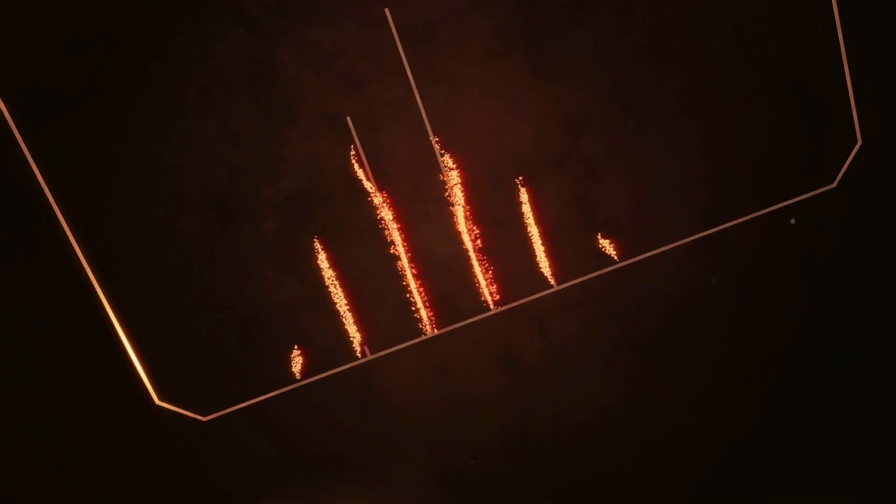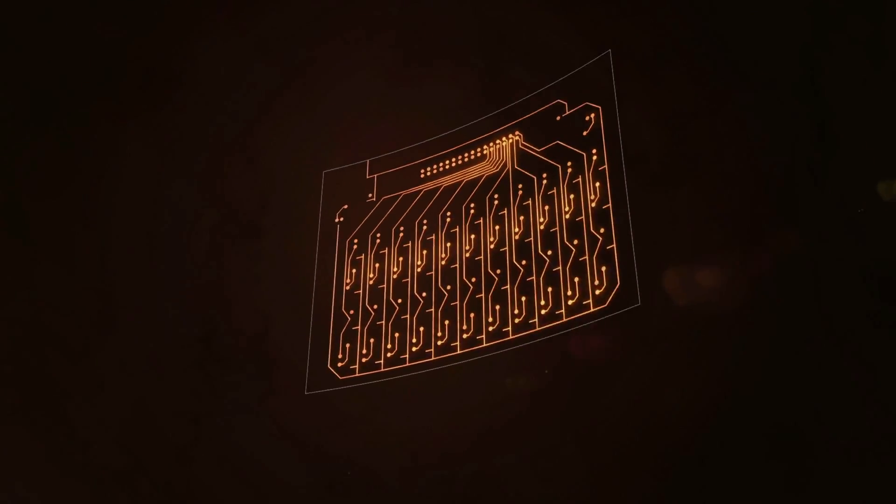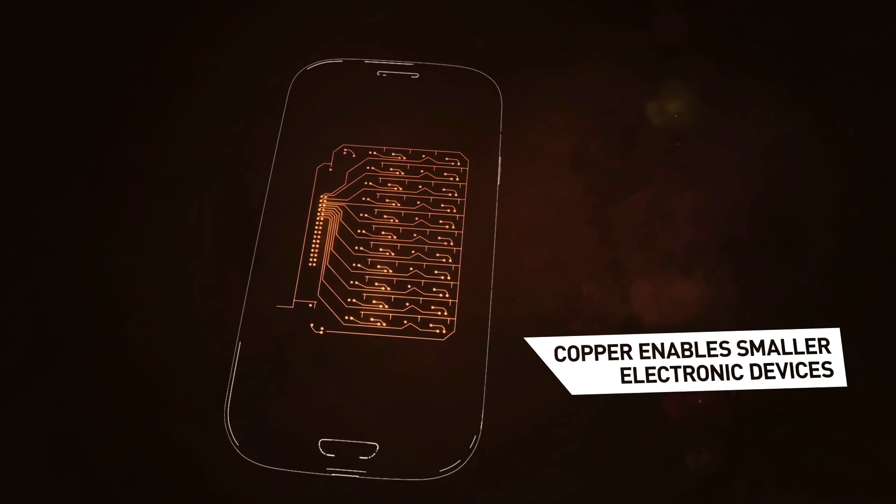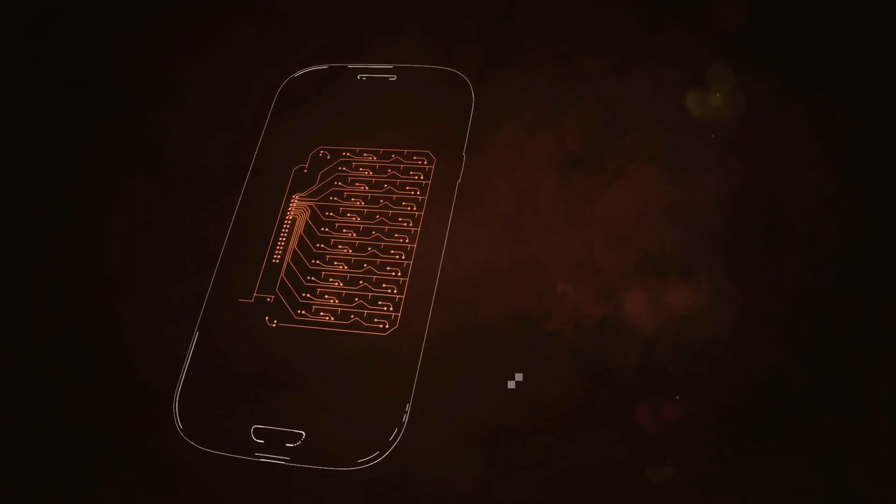A single chip can contain 100 km of tiny connections. An innovative copper deposition technique creates electrical pathways 4,000 times thinner than a human hair for smaller, faster, more reliable electronic devices.